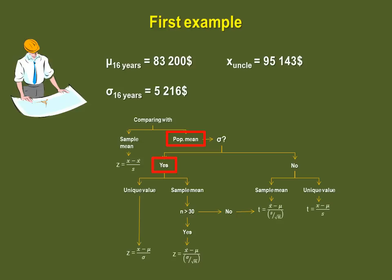Are you comparing a unique value or a sample mean to your population mean? You are comparing a unique value. So, to calculate your Z score, you must use this equation.